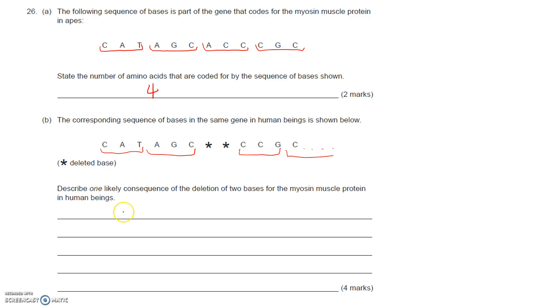One likely consequence of that is that although those two amino acids would be the same, the third amino acid in that sequence is going to be coded for by CCG rather than ACC. So what I'm going to write here is that one likely consequence is that the third amino acid will be different.